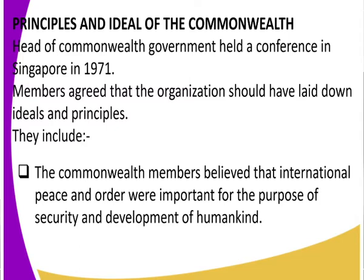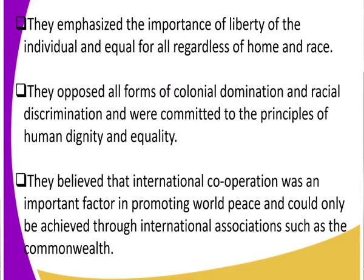One of the principles is that Commonwealth members believed that international peace and order was important. That's the first ideal or principle — they believed it was essential to have international peace and order for the purpose of security and development of humankind. So that was the first principle: international peace and order for the security of humankind.